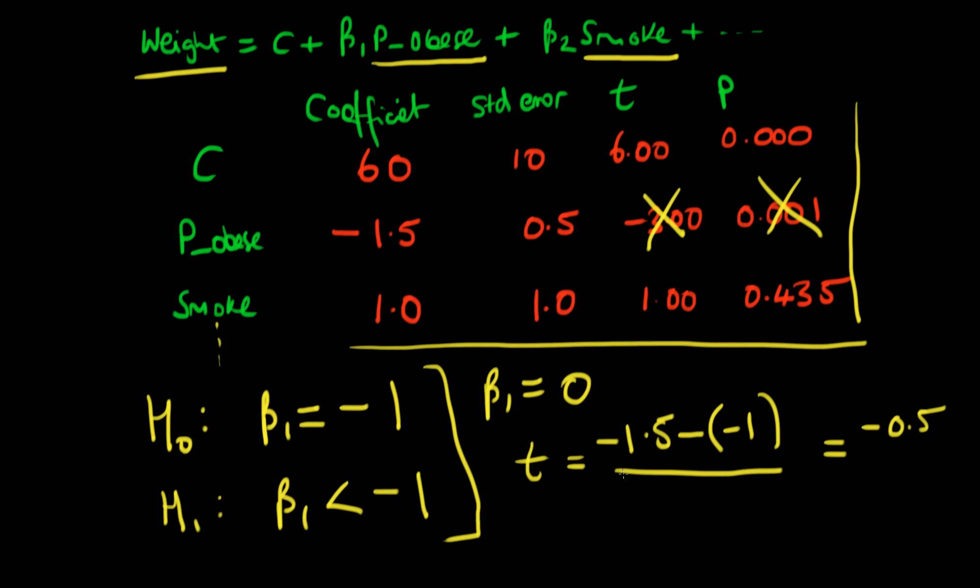But then I can still divide this by the same standard error that still holds for this new t statistic. So in fact we found a value for our t statistic for this other form of null hypothesis equal to minus one as opposed to the t statistic which was obtained under the null hypothesis that beta one was equal to zero.